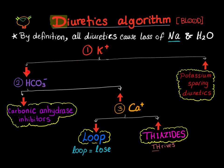But if the potassium was low in the blood — hypokalemia — we are not done yet. We have to look at the second electrolyte, which is bicarbonate, or bicarb. There is only one diuretic that leads to loss of bicarbonate in urine, so the bicarbonate level will be low in the blood, and this diuretic is the carbonic anhydrase inhibitors — for example, acetazolamide.